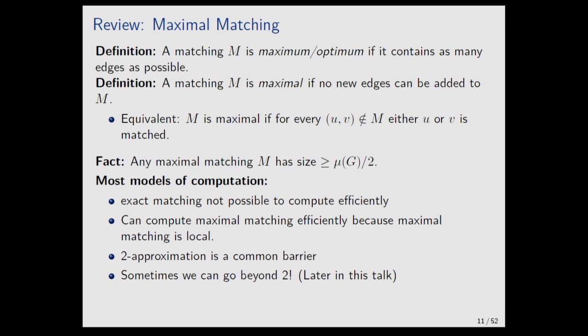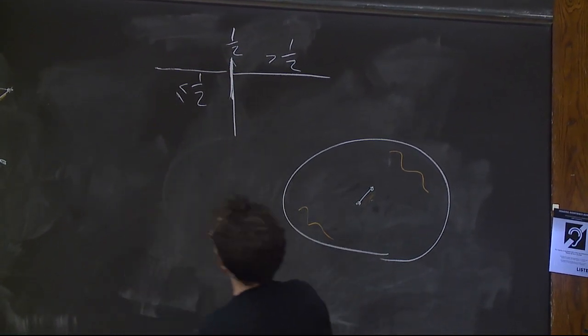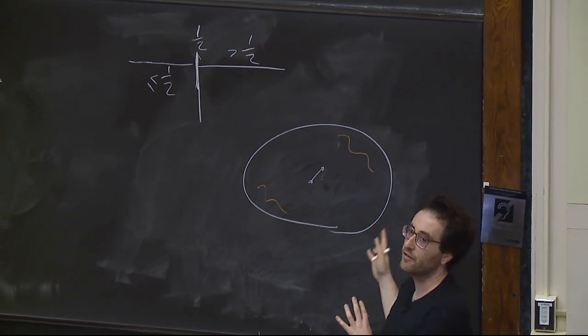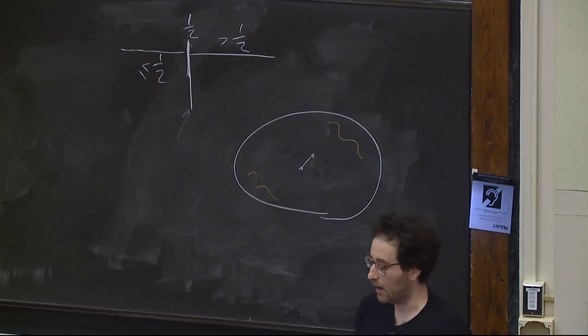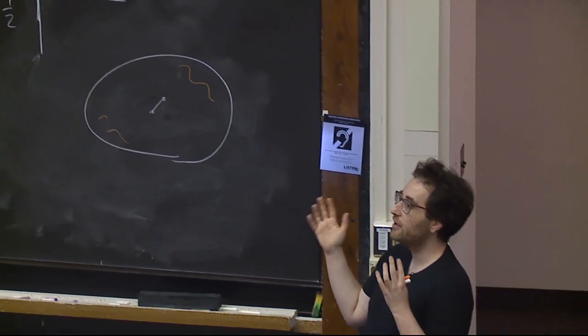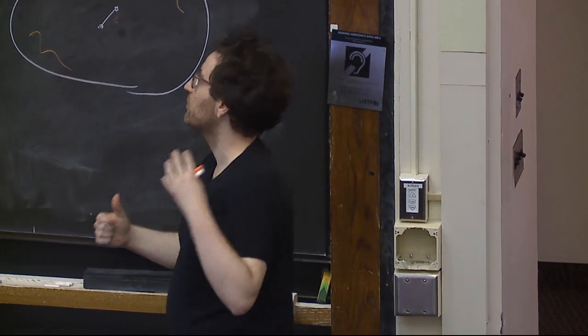A key theme of this talk: this is not just a common barrier, it's the common barrier for matching. In all the different models you can think of, there are basically two worlds: approximation less than or equal to one-half, and approximation bigger than one-half. These are like two different worlds — the techniques you use in one are very different from the other. And the reason is precisely because a maximal matching gives you a one-half approximation. What I want to do is show how to use maximality constraints to get a nice sparsifier, and then figure out how to go beyond one-half.